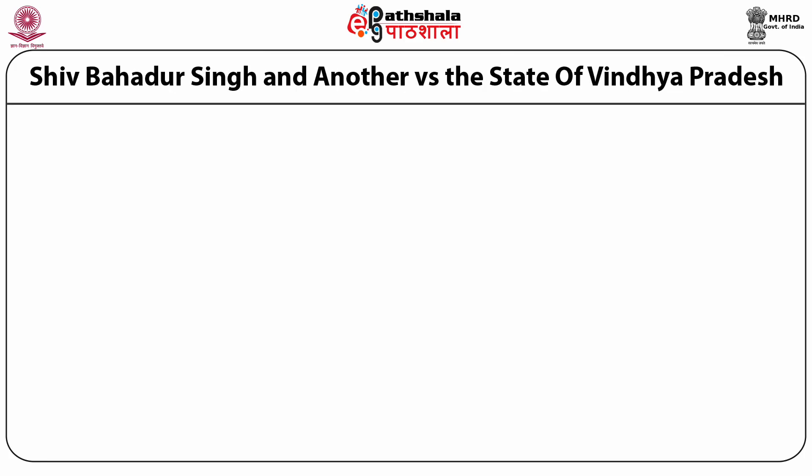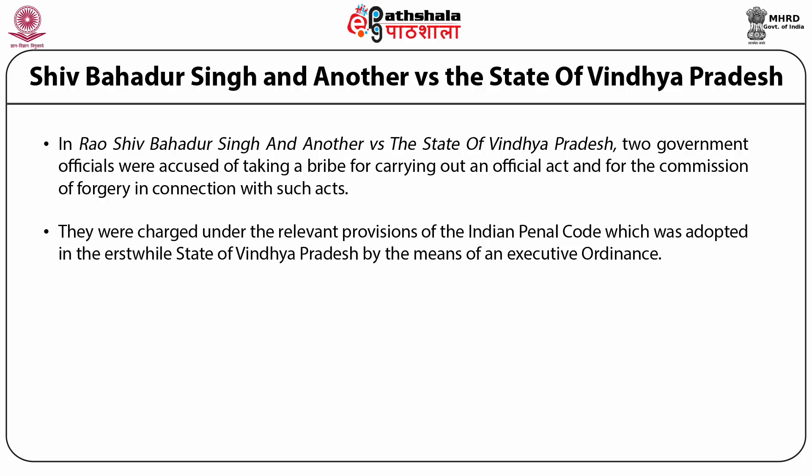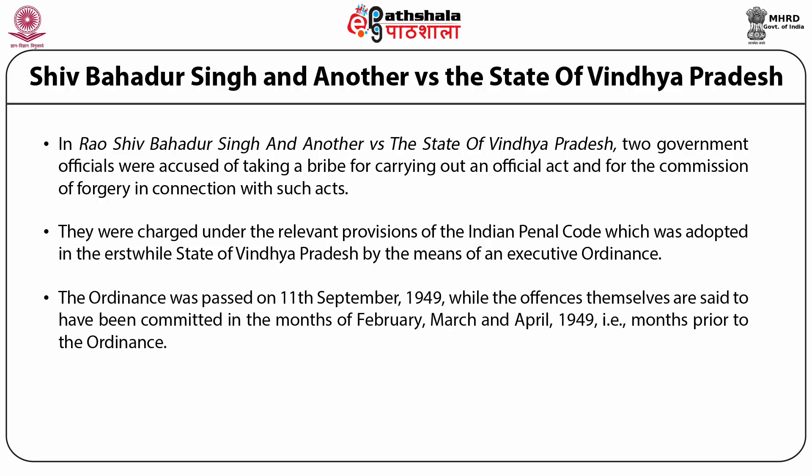Now we come to the landmark case of Shiv Bahadur Singh. In Shiv Bahadur Singh, two government officials of the erstwhile state of Vindya Pradesh were accused of taking a bribe for carrying out an official act and for the commission of forgery in connection with such acts. They were charged under the relevant provisions of the IPC, the Indian Penal Code, which were adopted in Vindya Pradesh by means of an executive ordinance. The ordinance was passed on 11 September 1949, while the offences themselves are said to have been committed in the months of February, March and April 1949 — months prior to the ordinance implementing the provisions of the IPC. So the question is: can they be convicted of offences under the IPC even though the IPC was implemented in the state by means of an executive ordinance a few months after the offence was committed?